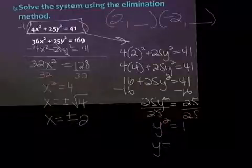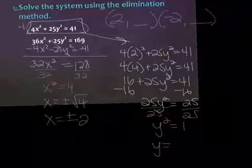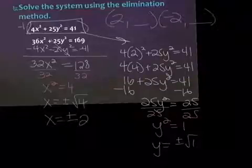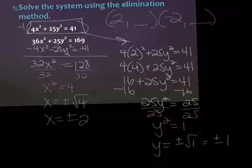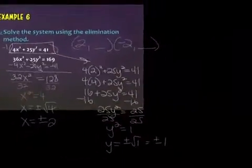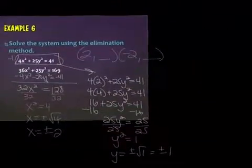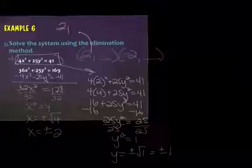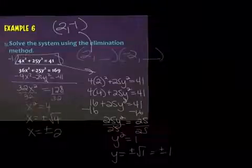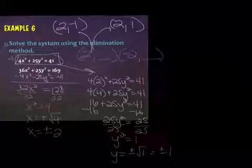Divide by 25. y squared equals 1, which means y equals plus and minus the square root of 1. So this one point at the top just divided into two: I've got positive 2, negative 1 and positive 2, positive 1.